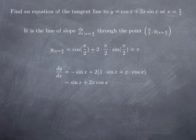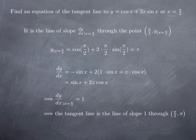This is not yet the slope of the tangent line. The slope is given by the value of this function at x equal pi over 2. Plugging in x equal pi over 2, we obtain sine of pi over 2, which is 1, plus 2 times pi over 2 multiplied by cosine of pi over 2, and cosine of pi over 2 is 0. So we obtain simply 1. In other words, the tangent line has slope 1 and passes through the point with coordinates pi over 2 and pi, so its equation is y minus pi equals x minus pi over 2, which we write as y equals x plus pi over 2.